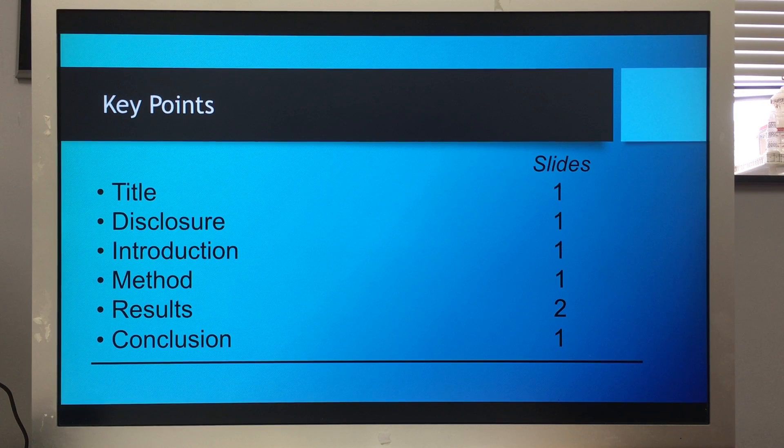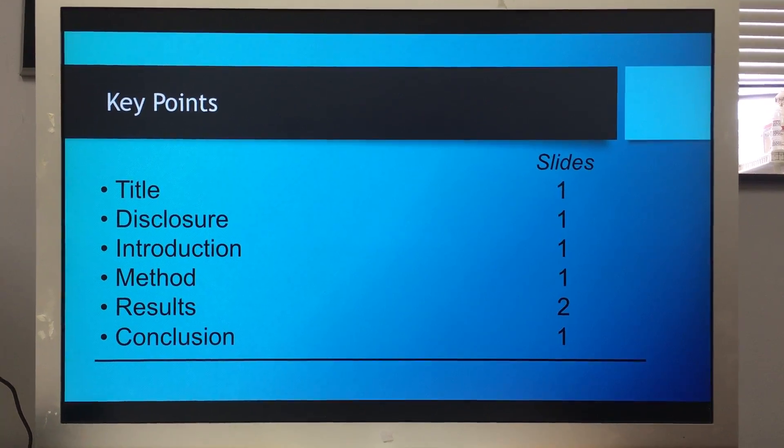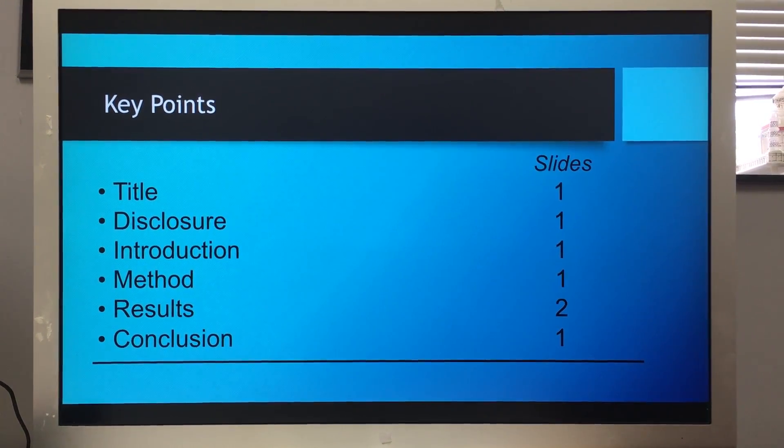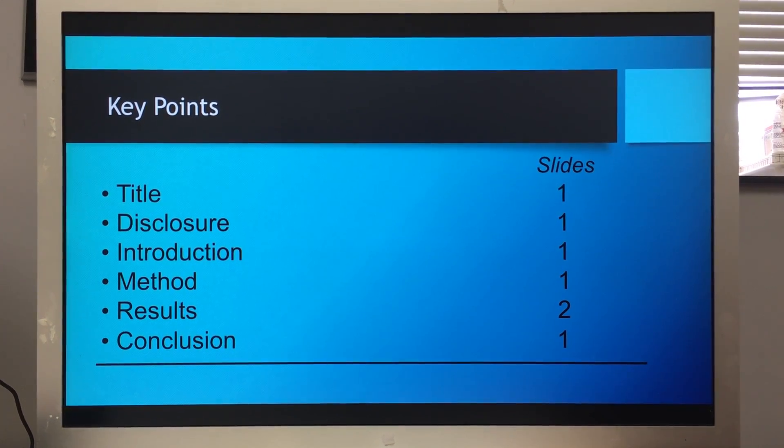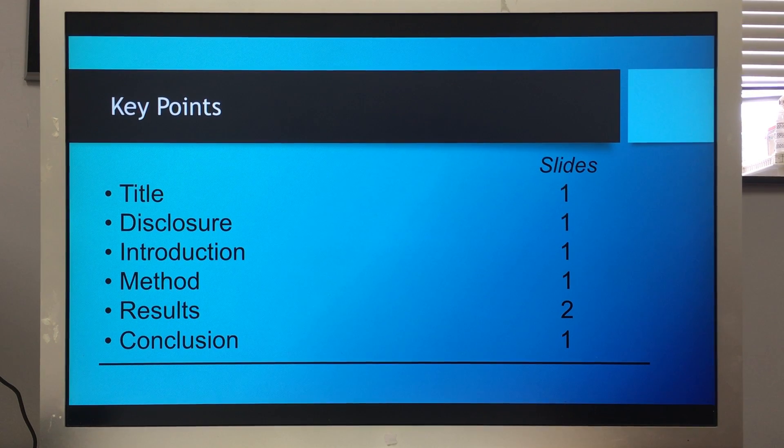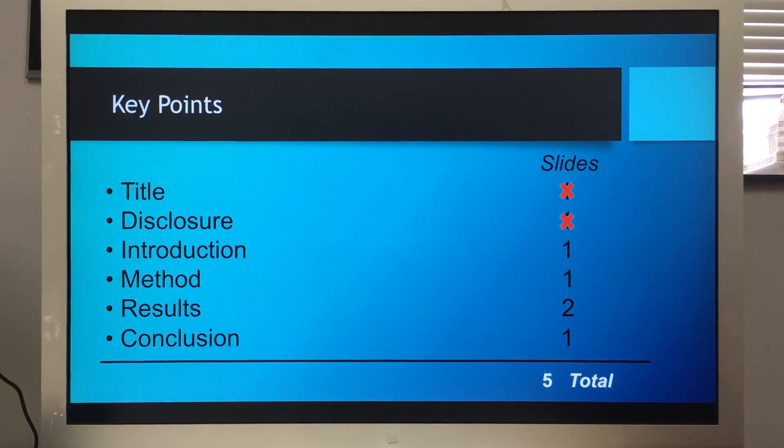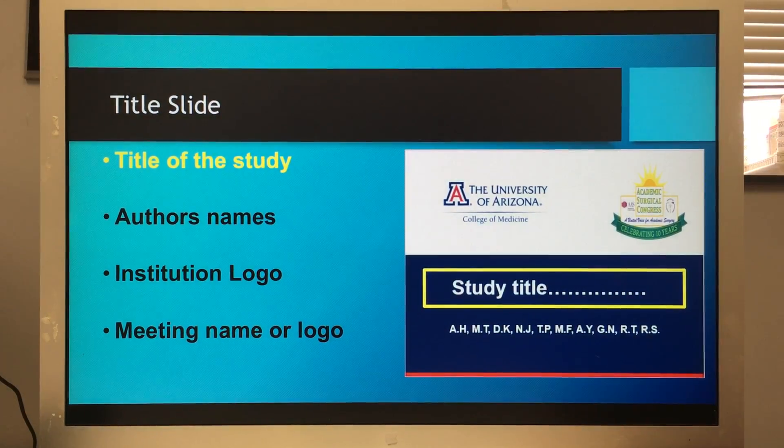As I said, seven. Actually, the first two slides—the title and disclosure—don't count against you. One slide for title, one for disclosure, one for introduction, one for methodology, two for results, and one for conclusion. Remember, the first two don't count against you.